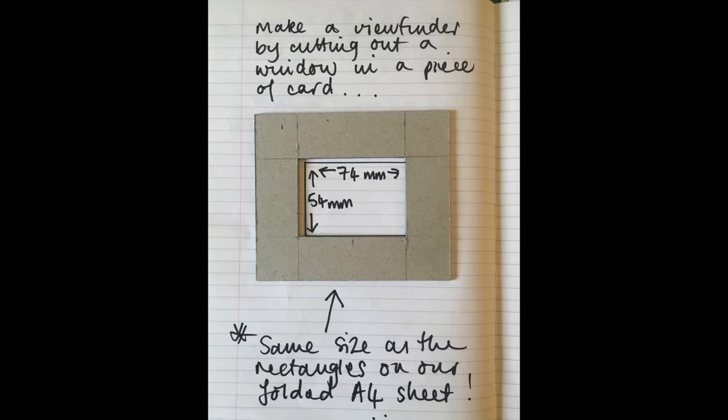To make a viewfinder, cut out a window in a piece of card. We're going to make it the same size as the rectangles on our folded A4 sheet. So that's 74 by 54 millimeters.